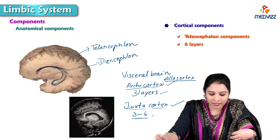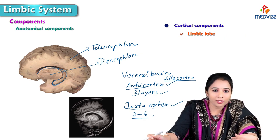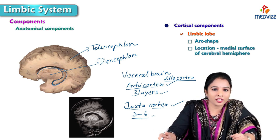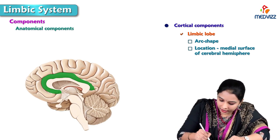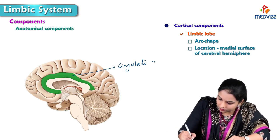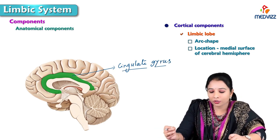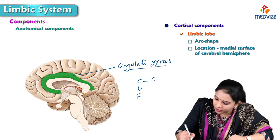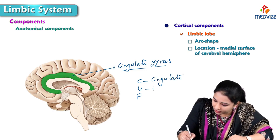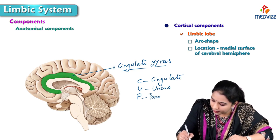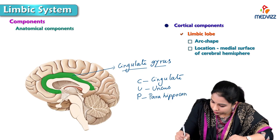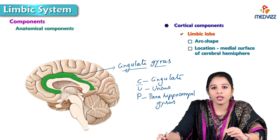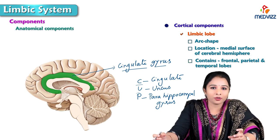Talking about the components, the cortical components derived from the telencephalon are the limbic lobe. The limbic lobe is an arch-shaped cortex on the medial surface of the cerebral hemisphere. To remember the components of the limbic lobe, I use the abbreviation CUP: C is for cingulate gyrus, U is for uncus, and P is for parahippocampal gyrus. The limbic lobe also consists of parts of the frontal, parietal, and temporal lobes.